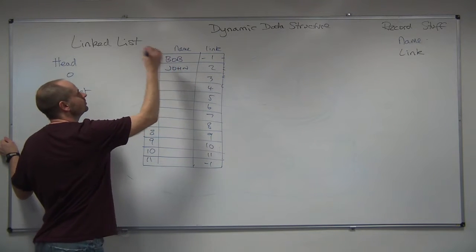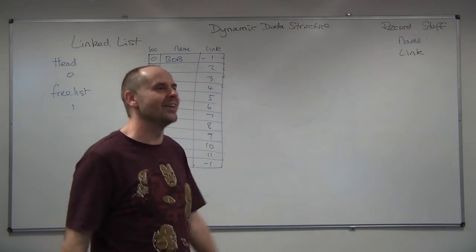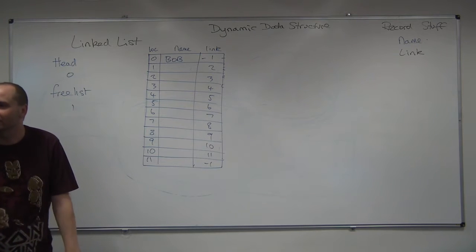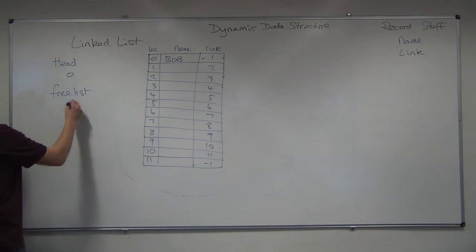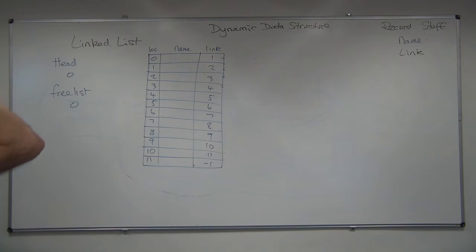We have John. So we just look for the next free space. How do you know that's the next free space? Because my free list says 1. The free list pointing to the free space. The head of the free space is at position 1. Start again. Bob.